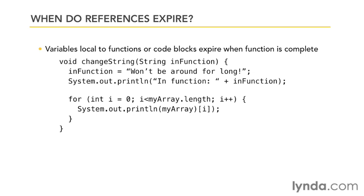I've spoken previously about the fact that in Java, scope is also defined by code blocks. So in the second part of the code, in the for loop, I'm declaring an integer as a part of the for loop. The name of the variable is i, and as soon as that for loop is done executing, that variable is no longer in scope, and it's eligible for garbage collection.